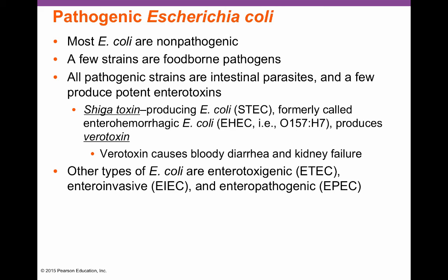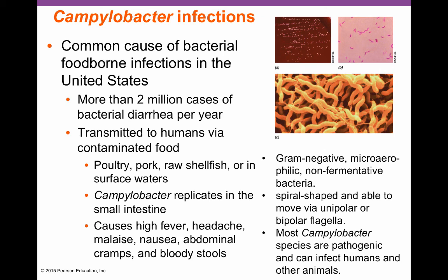E. coli must have a plasmid containing the Shiga toxin to be pathogenic — that's the O157:H7 serotype. There are several types: Shiga toxin-producing E. coli (STEC), enterotoxigenic E. coli (ETEC), enteroinvasive E. coli (EIEC), and enteropathogenic E. coli (EPEC). All are intestinal pathogens that produce toxins and are contracted from contaminated food, particularly meat. Campylobacter — named for its squiggly rod shape — causes about 2 million cases of diarrhea annually. It comes from raw poultry, pork, shellfish, and water contaminated by the bacteria. It replicates in the small intestine and causes high fever, headache, malaise, nausea, severe abdominal cramps, and in some cases bloody stools.